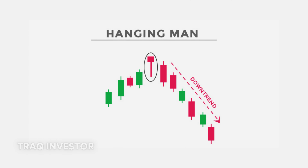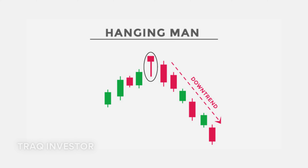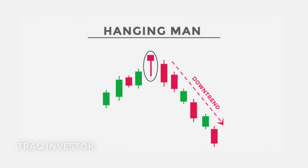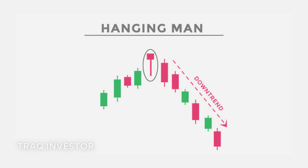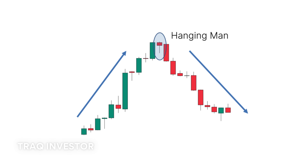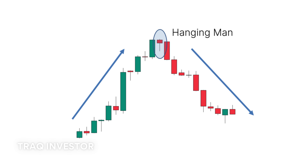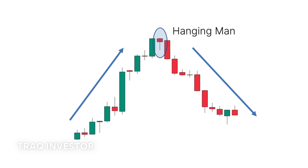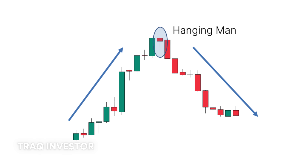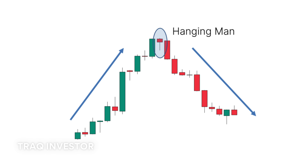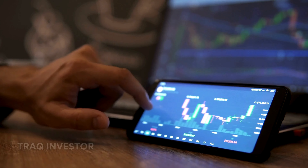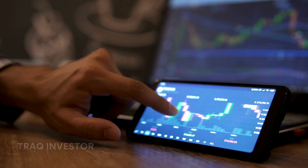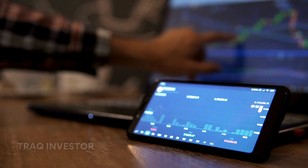Enter the hanging man, the bearish counterpart of the hammer. It shares the same shape but materializes at the uptrend's conclusion. It signals a substantial sell-off during the day, yet buyers manage to push the price back up. This pronounced sell-off is often interpreted as a sign that the bulls are losing control of the market.